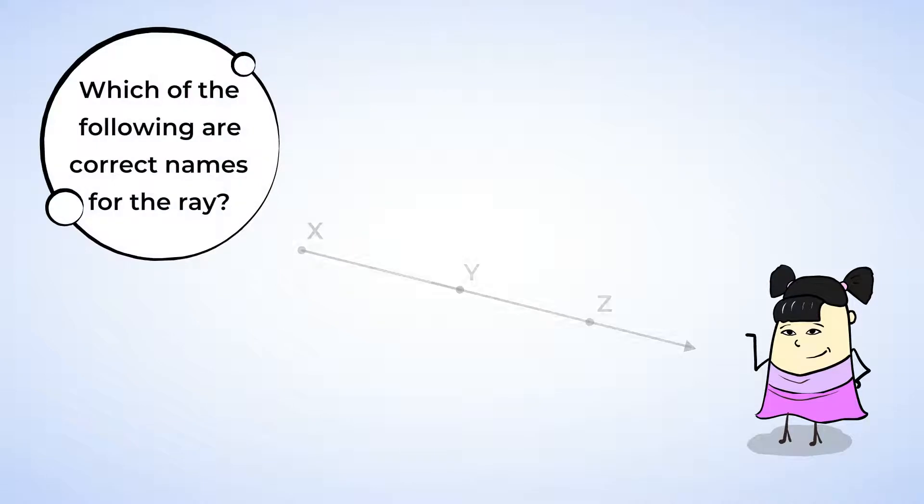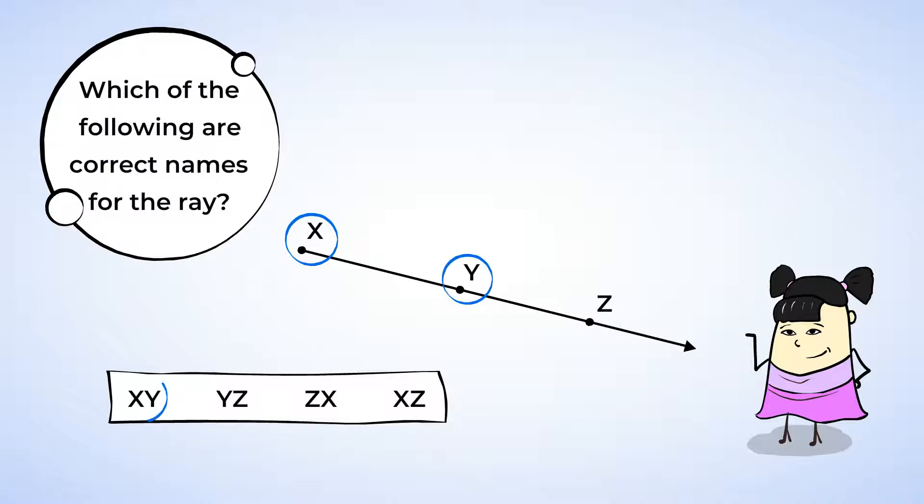Which of the following are correct names for the ray? We know that in order to name the ray, we need to start at the endpoint. X is the endpoint, so the names must also start with X. We can go from X to Y giving the ray the name XY, and we can also go from X to Z giving the name XZ.